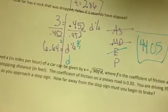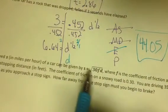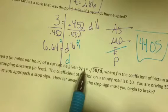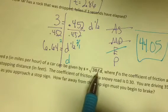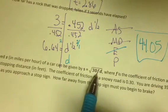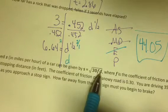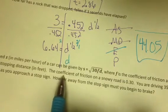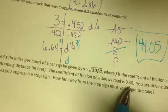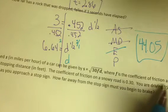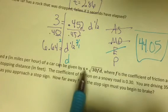The last problem is about speed S in miles per hour of a car, which can be given by this equation. F is the coefficient of friction, D is the stopping distance. As you read on, the coefficient F is 0.30, and you're driving 35 miles per hour. That's your speed.